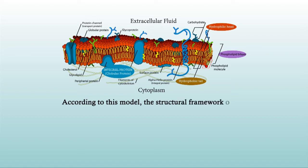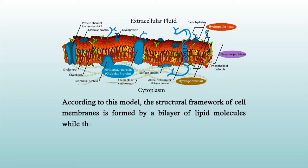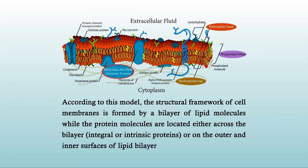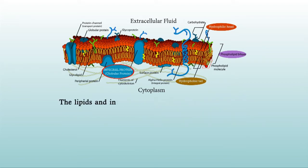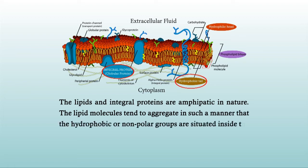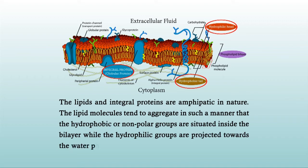According to this model, the structural framework of cell membranes is formed by a bilayer of lipid molecules, while the protein molecules are located either across the bilayer as integral or intrinsic proteins, or on the outer and inner surfaces of the lipid bilayer as extrinsic proteins. The lipids and integral proteins are amphipathic in nature. The lipid molecules tend to aggregate so that the hydrophobic or non-polar groups are situated inside the bilayer, while the hydrophilic groups are projected towards the water phase in the cytosolic or exoplasmic phase.